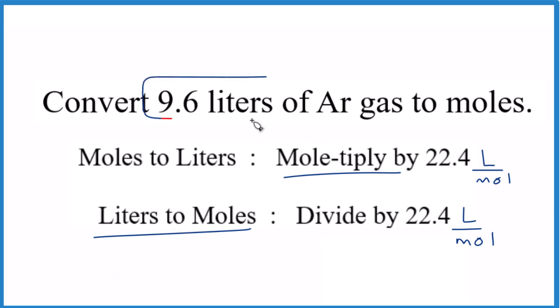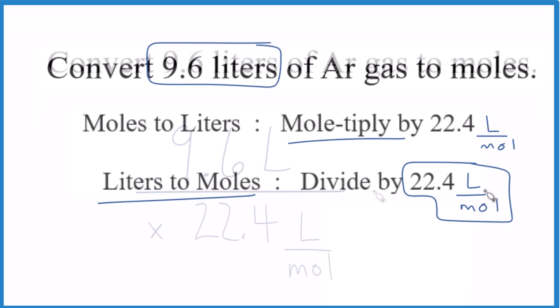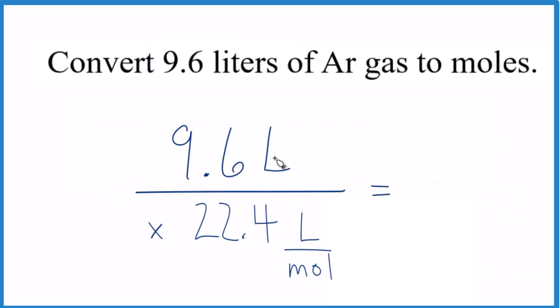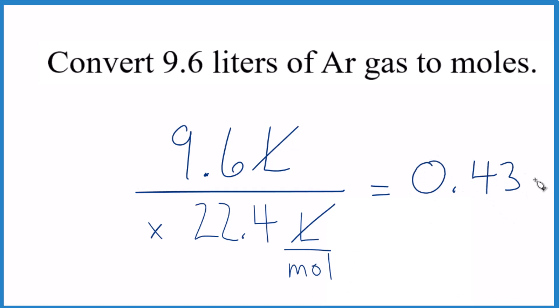So we have 9.6 liters and we're going to divide that by 22.4 liters per mole. Let's do that. So we have our 9.6 liters from the problem, then we have the 22.4 liters per mole. Liters is on top, both of those, it cancels out. We're left with 0.43 and the units are moles.